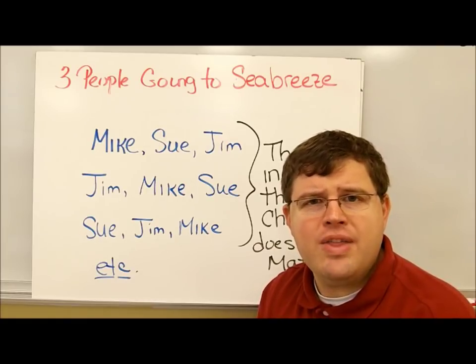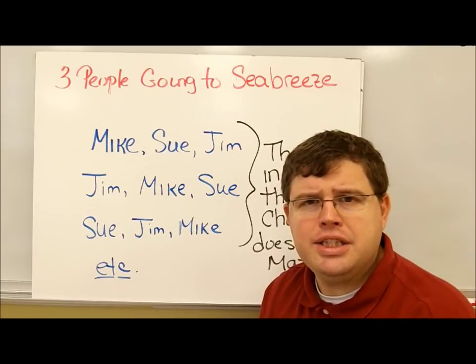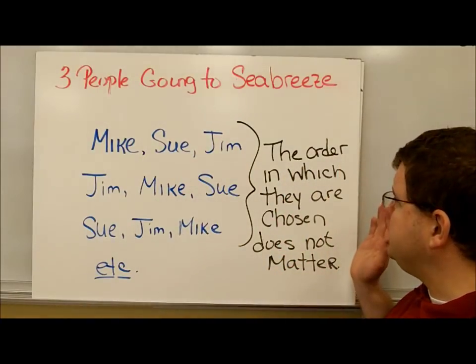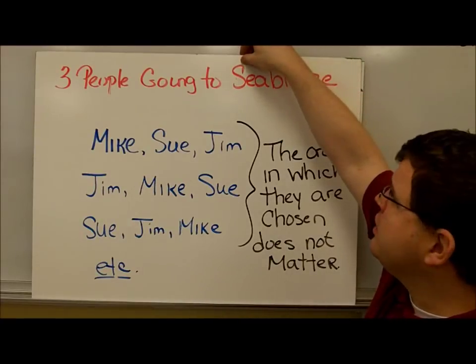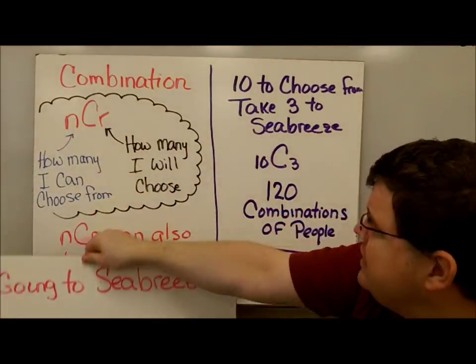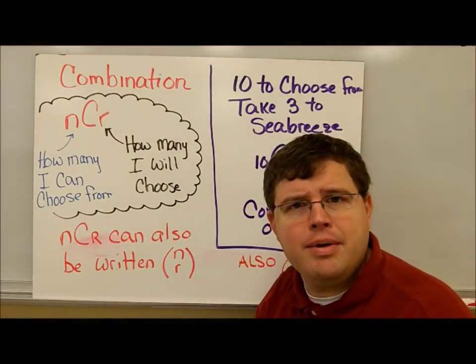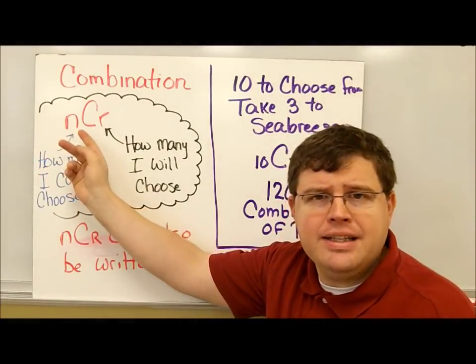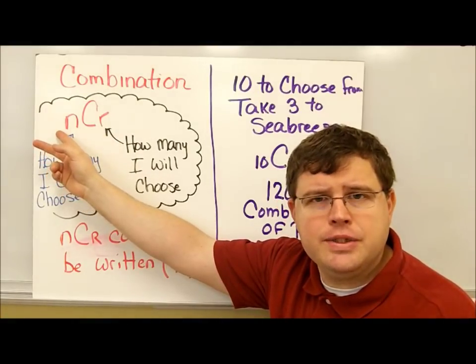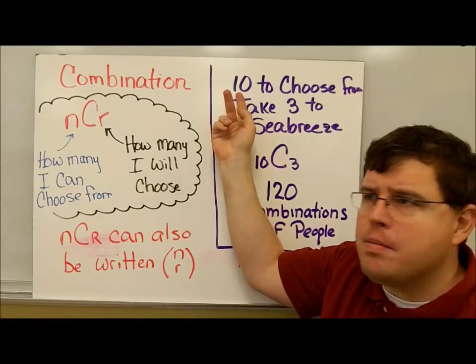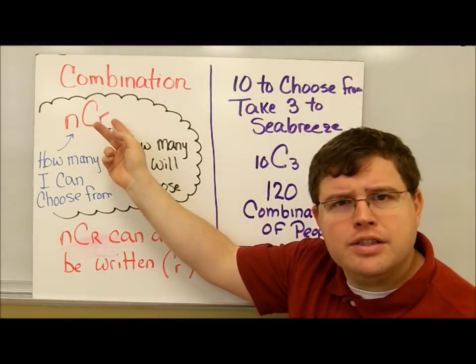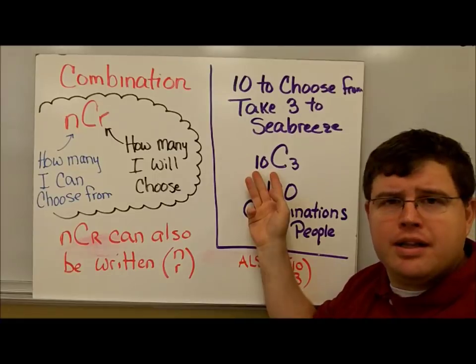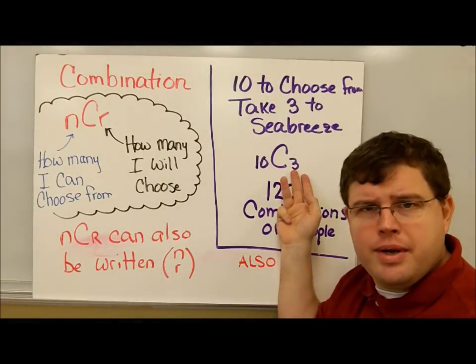When the order does not matter, we call that a combination. A combination is when the order makes no difference. Now let's take a look at this situation in terms of mathematics. We have 10 people in our club and we're going to choose three to go to Seabreeze. We have notation just like we did before. Instead of nPr, we have nCr, C for combination. N is how many I can choose from—in this case, there's 10 people in the club. R is how many I'm going to pick. So I'm going to pick three people to go with me to Seabreeze, so 10C3.